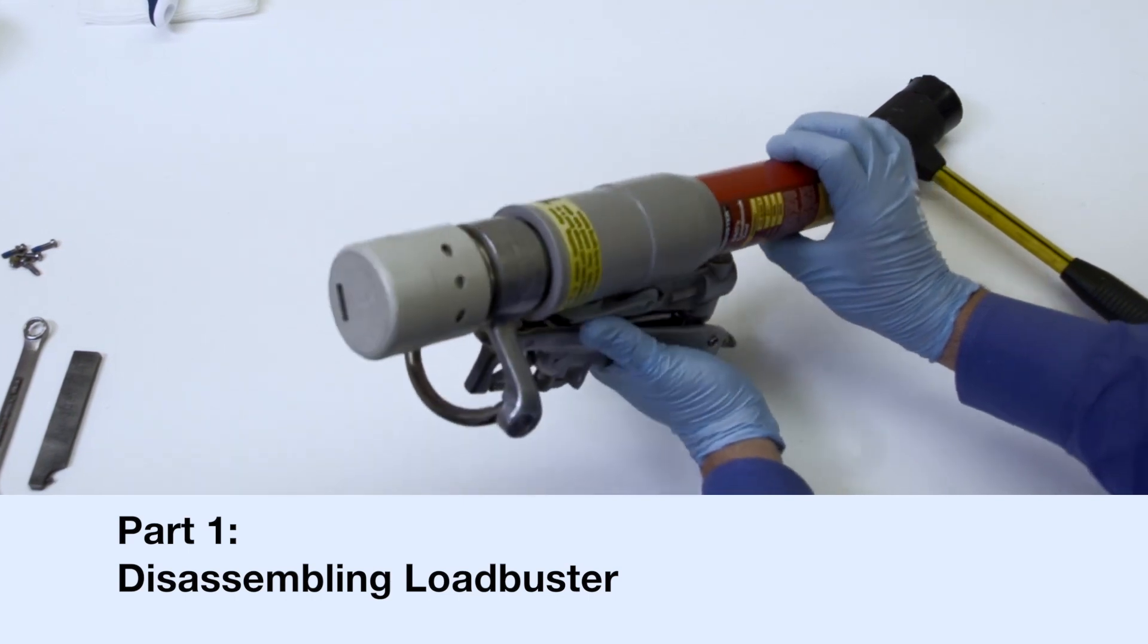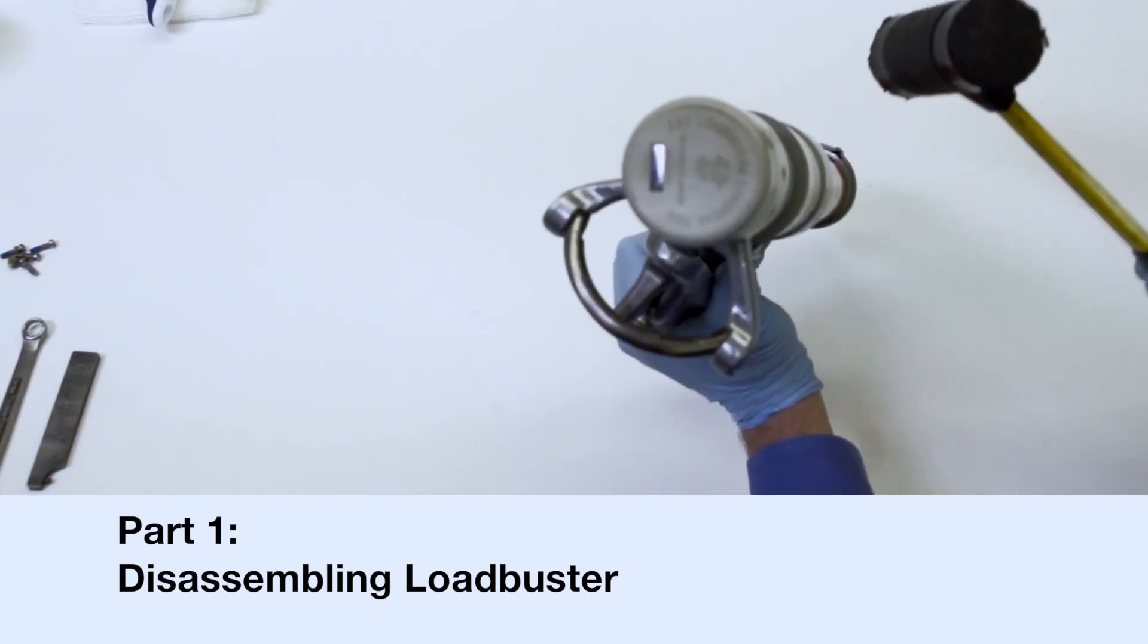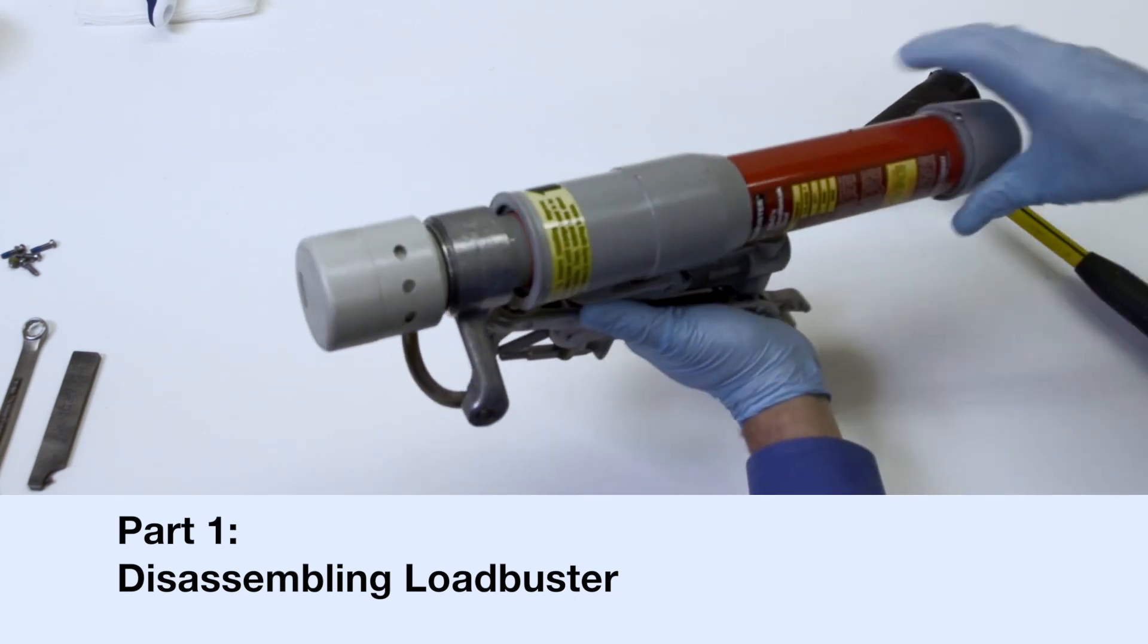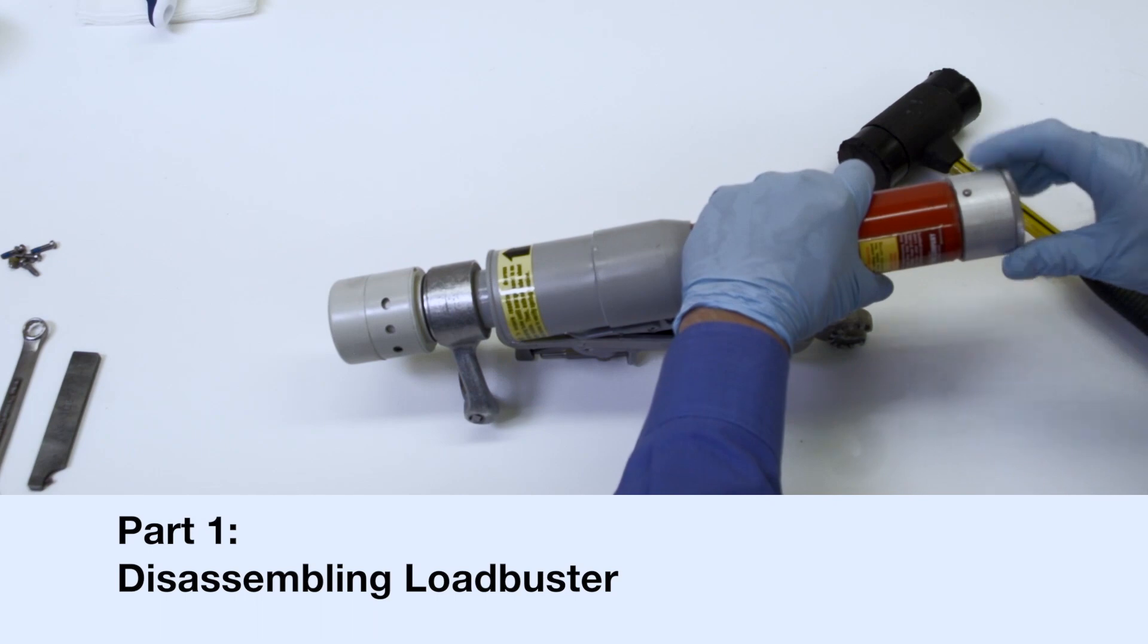First, loosen the tube cover by tapping on it with a rubber mallet. Pry the cover until it fits over the end cap and remove.